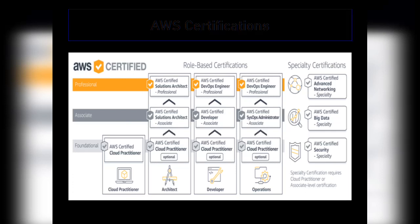Moving to the next one is the professional engineer level certificate, which is divided into two parts. The first is AWS Certified Solutions Architect Professional. This certificate is for people who have advanced technical skills and experience in designing distributed applications and systems on the AWS platform.